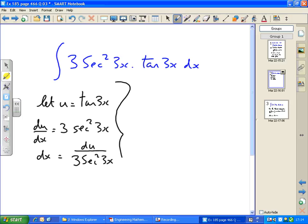And rearranging, dx equals du over 3 sec squared 3x. So, similar procedure. The integral now becomes, taking a 3 outside the integral, times u, which I've let u be tan 3x, times du over 3 sec squared 3x.